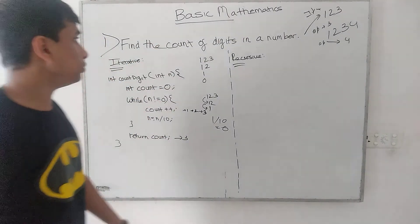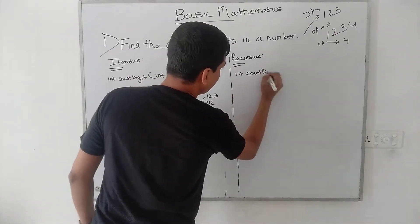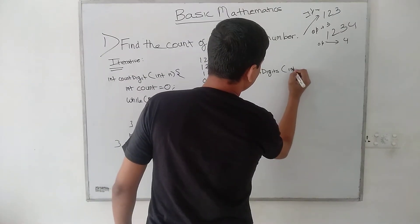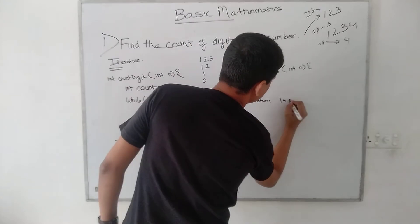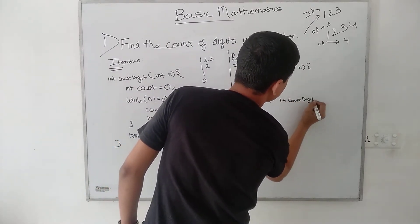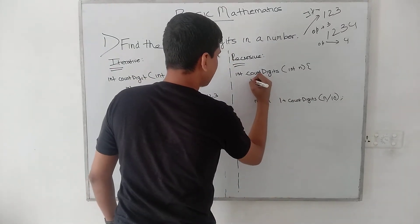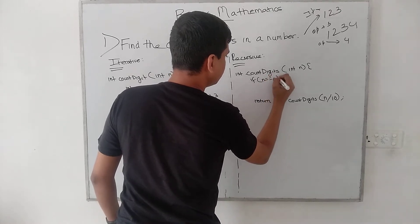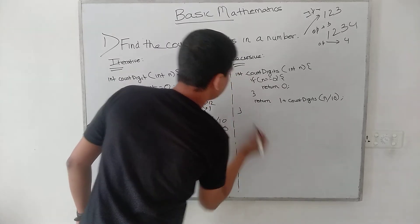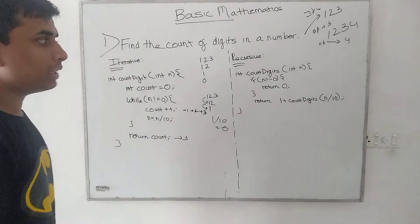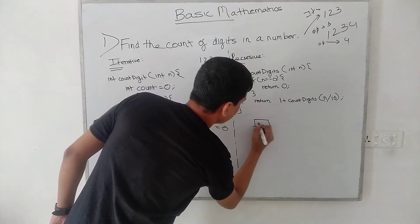To find out the recursive solution for the count of digits in a number, the code would be: int countDigits(int n). We would return 1 plus countDigits(n / 10). And here there would be a base condition: if n is equal to 0, we return 0. So what is exactly happening in this recursion? First, countDigits is called with n, and in the next call it passes n divided by 10.